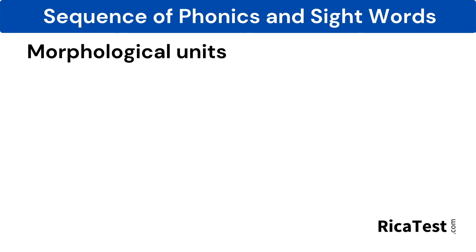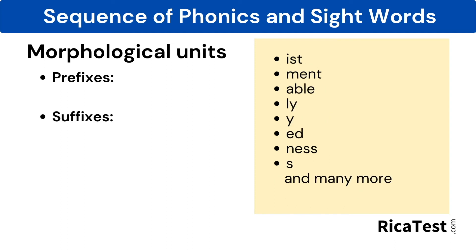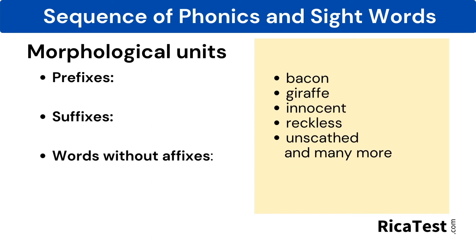Next in the sequence of teaching phonics is common inflected morphological units, which include prefixes like inter, micro, by, anti, and many more. Suffixes such as ist, ment, able, ness, and also many more. And words without affixes that do not change from their root word, such as bacon, giraffe, and unscathed, as well as others.